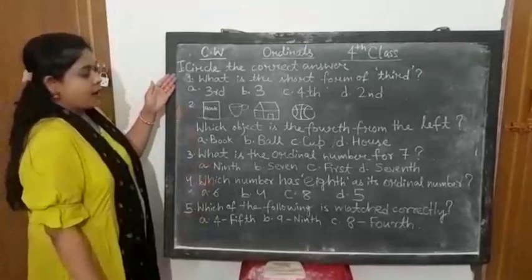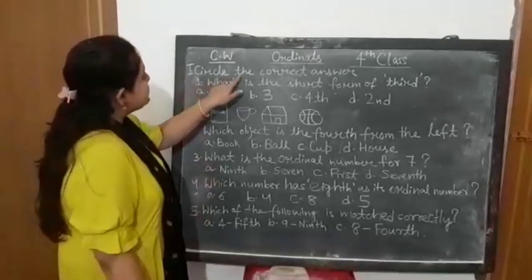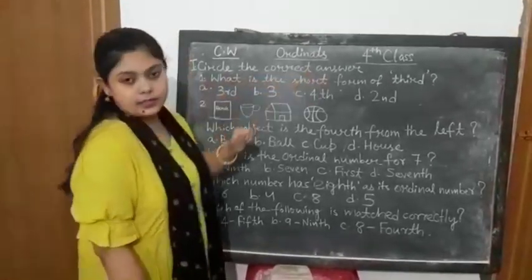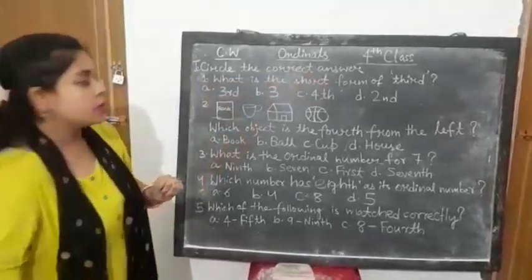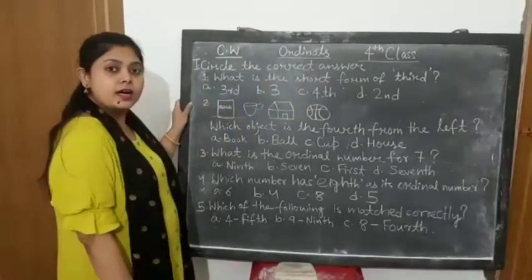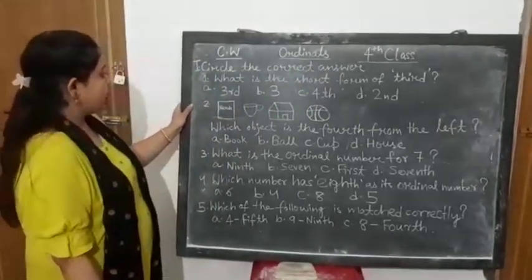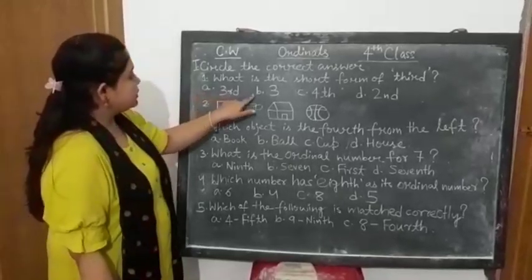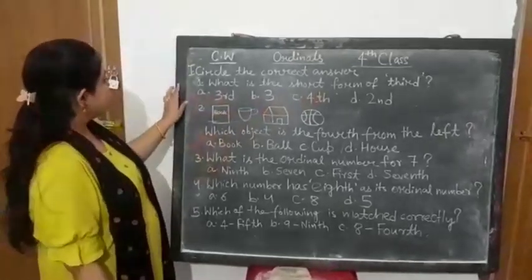See question number 1. This is circle the correct answer. What you have to do? You have to circle the correct answer from these options. Clear?